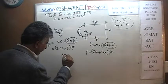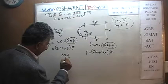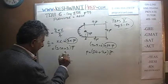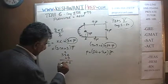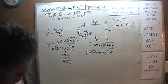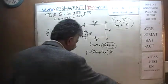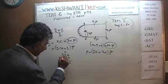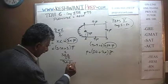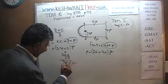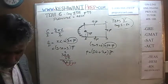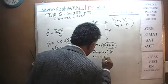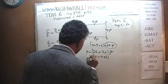So 3.14 times 3: treating it as 314 times 3, we get 3 times 4 is 12, write 2 carry 1; 3 times 1 is 3 plus 1 is 4; 3 times 3 is 9 — giving 942. Inserting two decimal places, it's 9.42. So 24 plus 9.42 gives us the approximate perimeter.